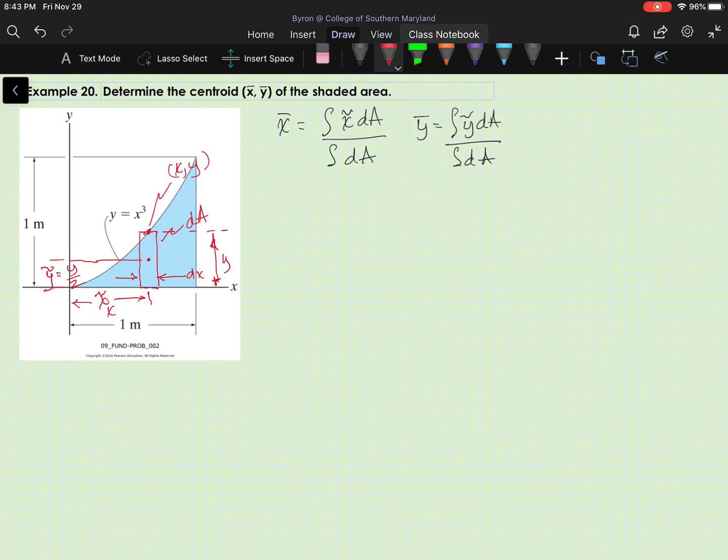Now our second step is to express dA in terms of the differentiating element dx, since we have a vertical element. So I'm going to write dA equals y dx, but we know to integrate that we're going to have to express y in terms of x, which we have. We know that y equals x cubed. The curve is y equals x cubed, so I can substitute in for y, x cubed.